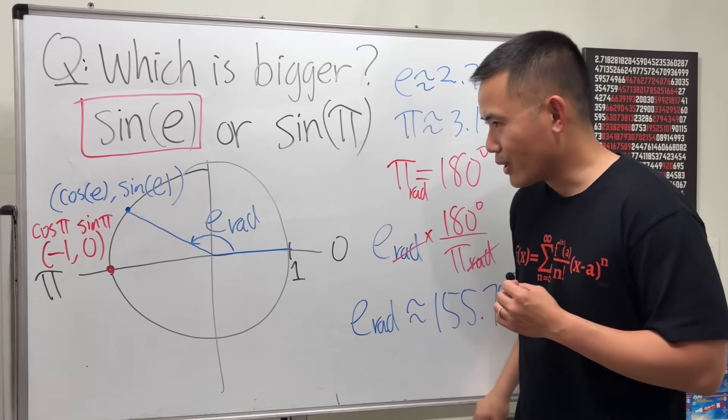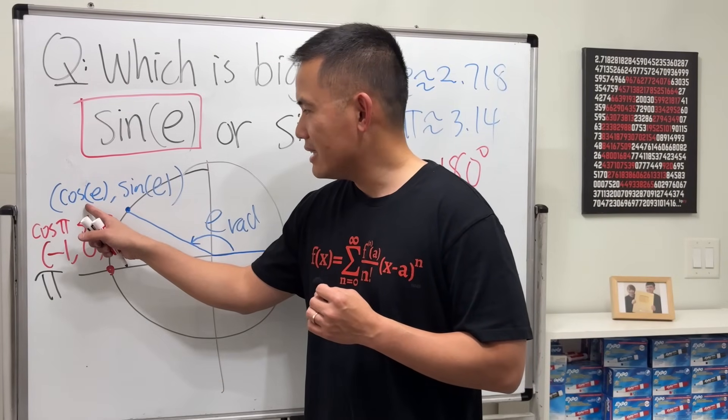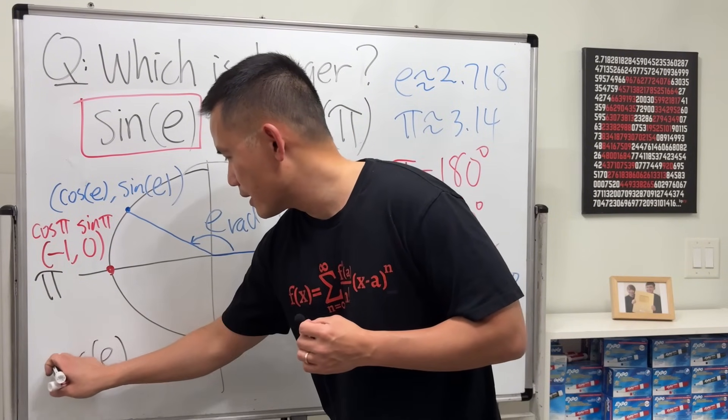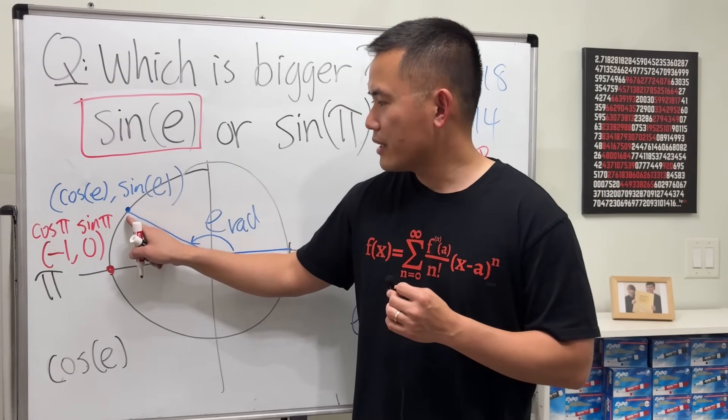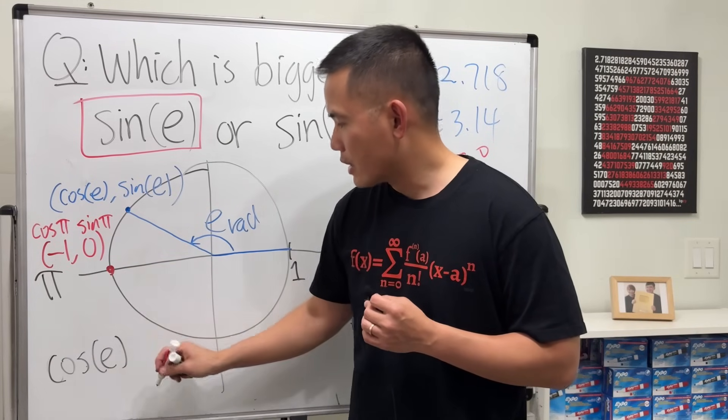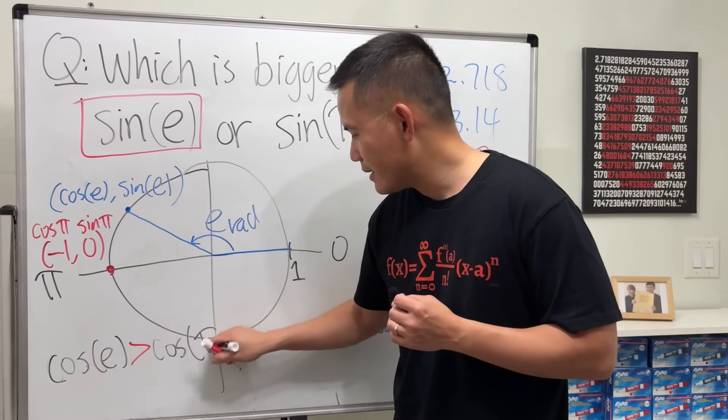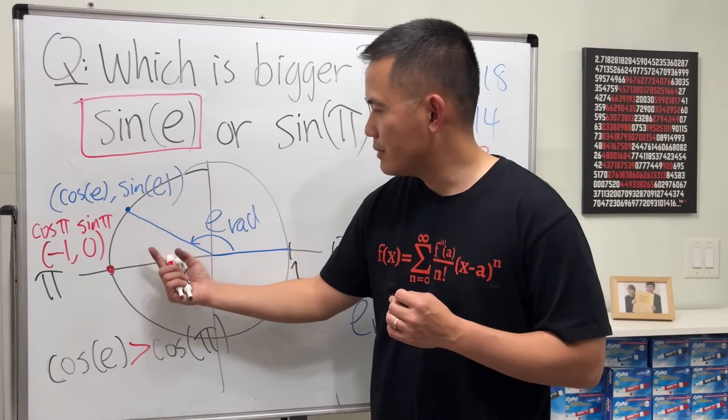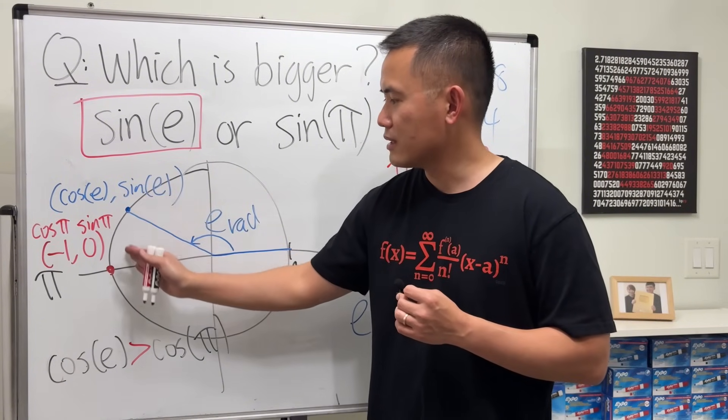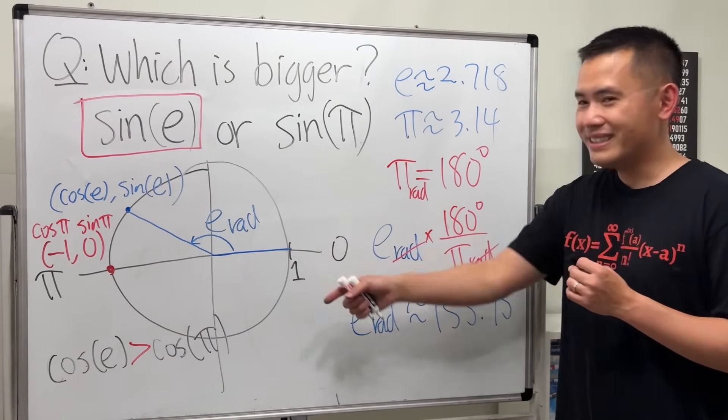In fact, I can also tell you if you look at the cosine, cosine e. This right here is toward the right. This right here is actually bigger than cosine π as well. Because it's more to the right and it has a bigger x-value. Yeah, just like that. Pretty cool, huh?